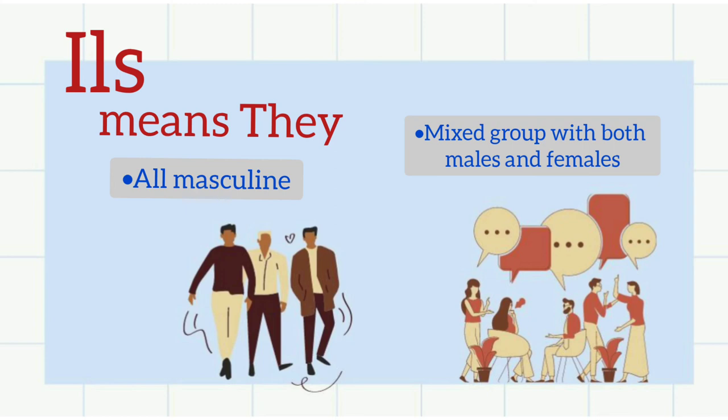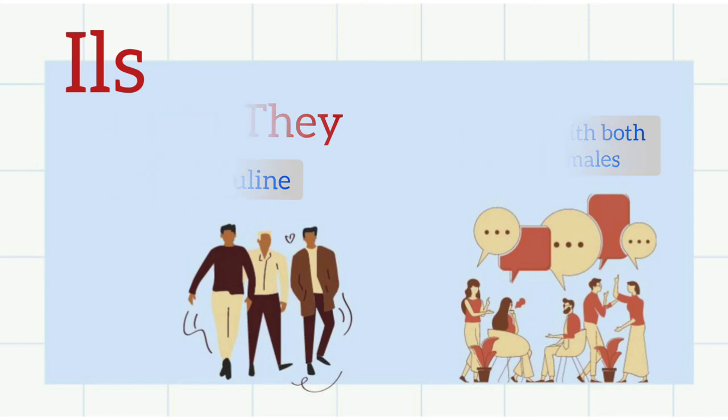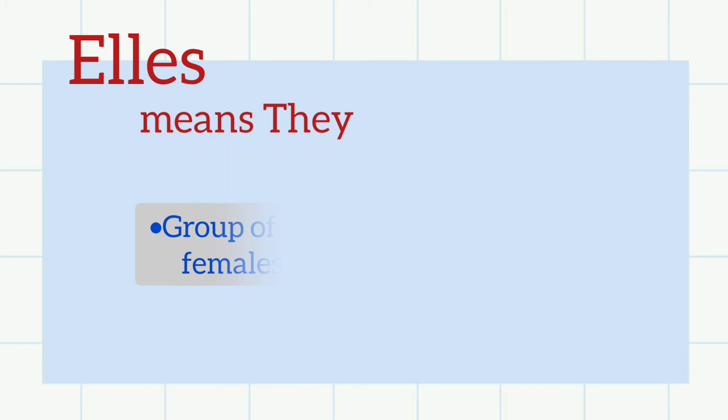And the last pronom sujet is elles. Elles again ends in S. S will not be pronounced, so E-double-L-E-S will be pronounced as elles. Elles stands for they. A group of all females will be called elles.